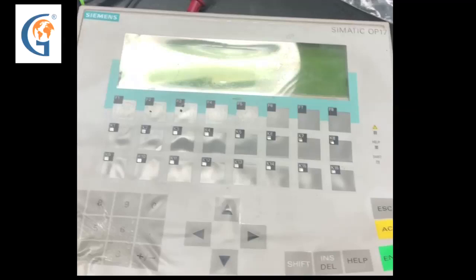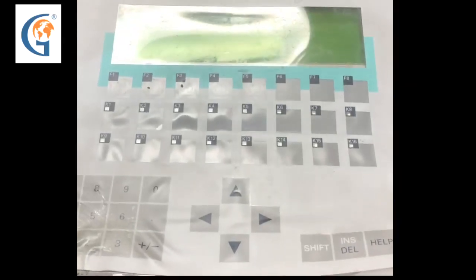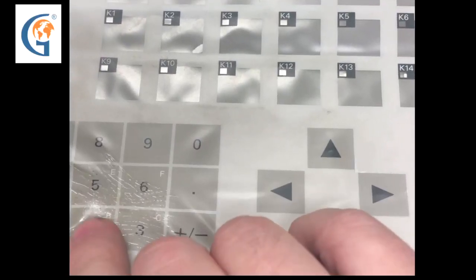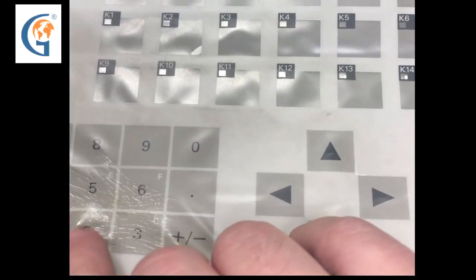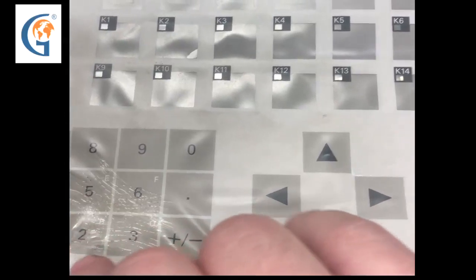Here, we have a Siemens Simatic HMI panel that is getting repaired. This one has obvious heat damage and a report from the customer that some of the buttons do not work.